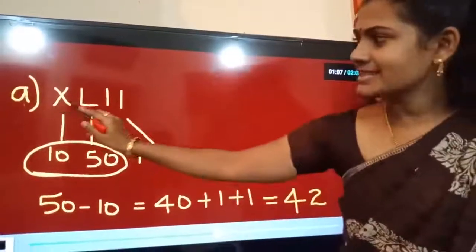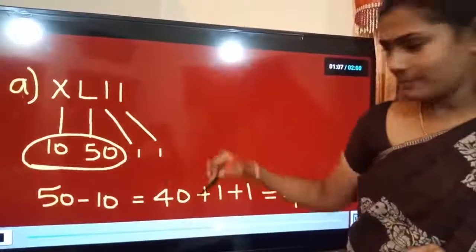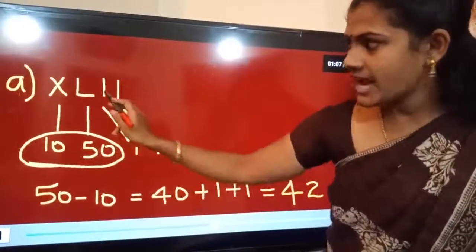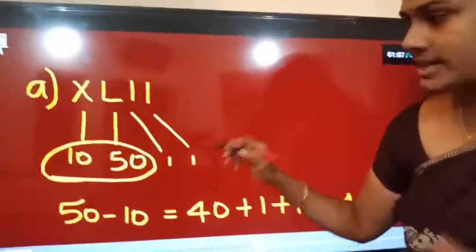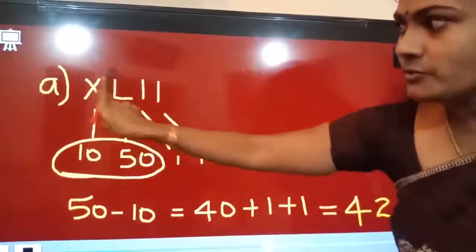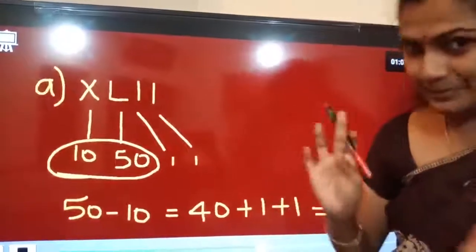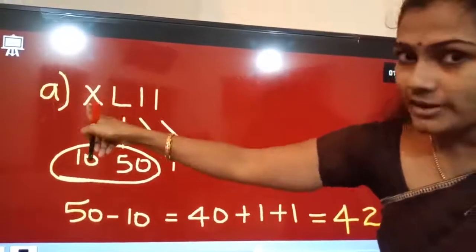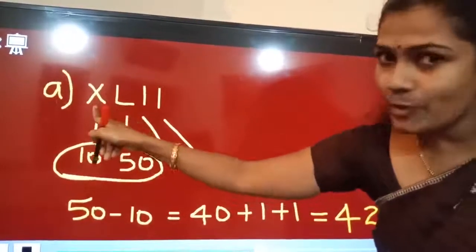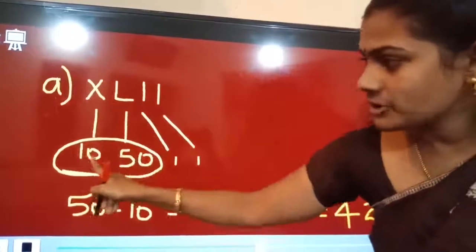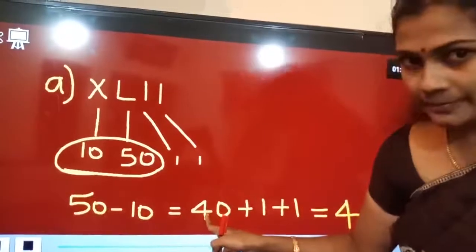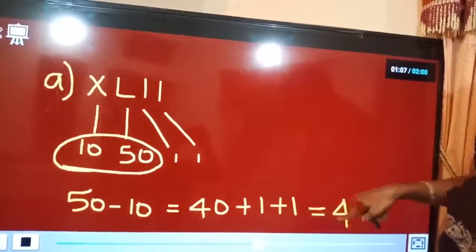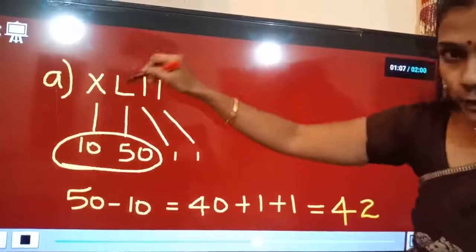Let me explain again. X, L, I, I — we want to convert this into a Hindu Arabic numeral. X is 10, L is 50, I is 1, and again I is 1. X is placed on the left side of L, so we subtract: 50 minus 10 equals 40. Then 1 and 1 are smaller, so we add directly: 40 plus 1 plus 1 equals 42. So for this Roman numeral, the value is 42.